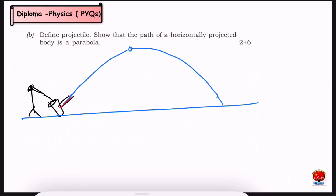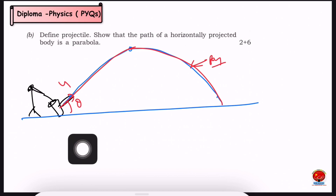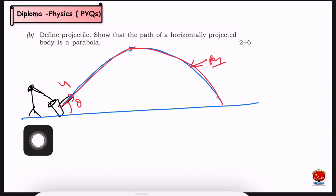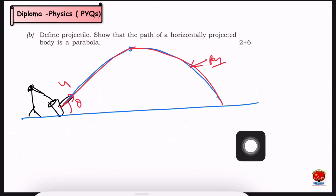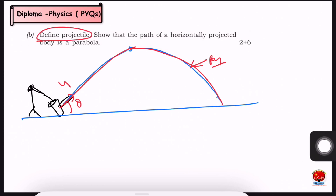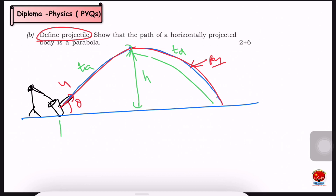The ball is projected with initial velocity u at angle theta. It reaches a maximum height and then comes back to the ground. This parabolic shape is the projectile motion. Anyone who throws an object in the air with some angle and force will see it reach the ground following a parabola — this is the projectile.